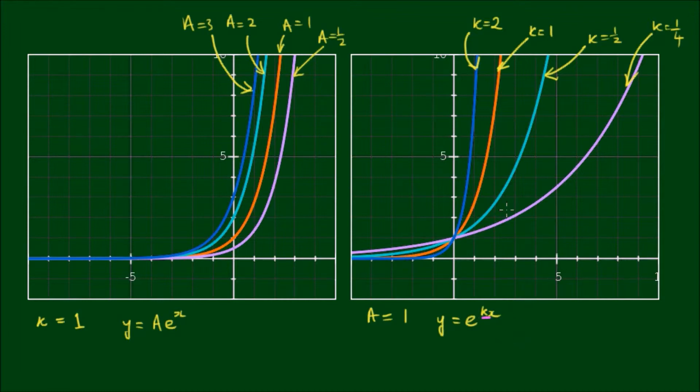You can see that the growth factor k has a much more profound influence on the shape of the curve than our coefficient A. That sort of makes sense because A is the amount or quantity that we begin with, and k represents how quickly we grow.